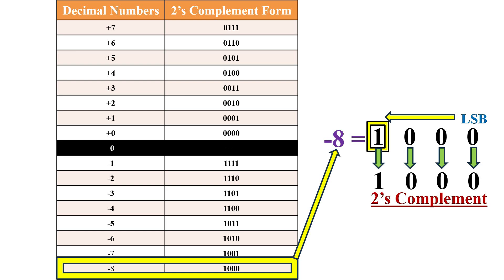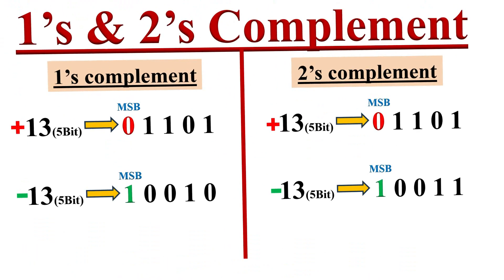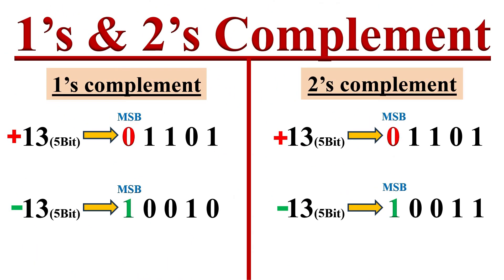Two's complement form is very useful for performing arithmetic operations in digital circuits because we can perform subtraction without dedicated subtraction circuits. That's all about one's complement and two's complement representation of signed binary numbers.